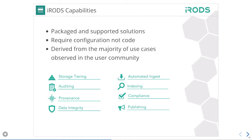As a consortium, we have identified about eight different capabilities that most users want out of the box. These include storage tiering, automated ingest, auditing (writing every operation into ingest technologies such as the Elastic Stack), indexing (integrating horizontally with indexing services and providing provenance-driven compliance), data integrity (keeping data safe at rest on disk), and publication (automatically publishing and enforcing the published status of data).